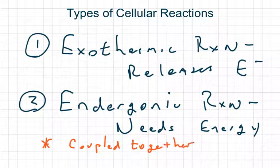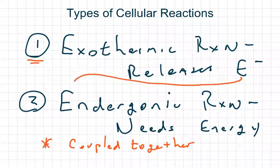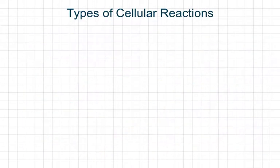A lot of times what you'll see is these two types of reactions are coupled together, or they work in tandem. What you'll see is an exothermic reaction goes first, and the energy released from that reaction will feed into the endergonic reaction. We'll see this play out in the ATP energy production pathways in the next videos.